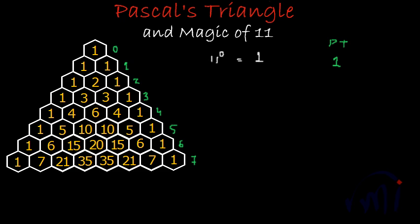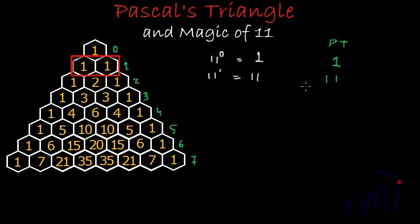If I talk about 11 to the power 1, the value is 11, and this can be found in the first row of Pascal's Triangle. The first row has 1, 1. Noting down from the right-hand side — the units place — 1, 1 is the number 11.